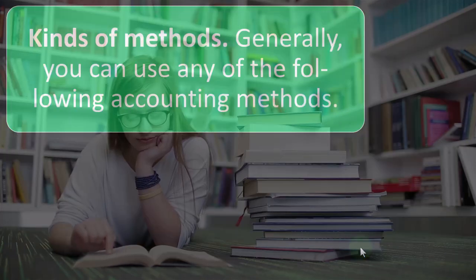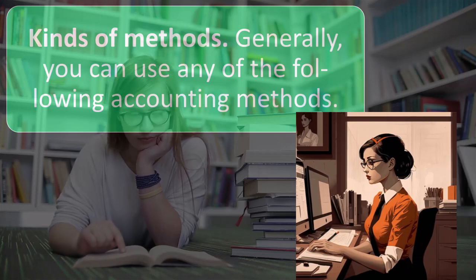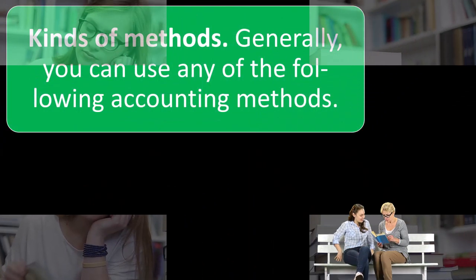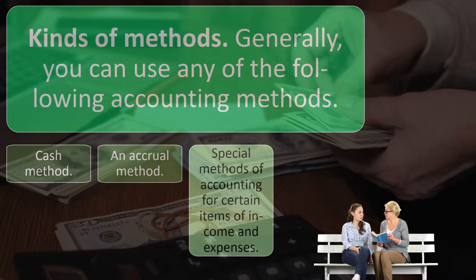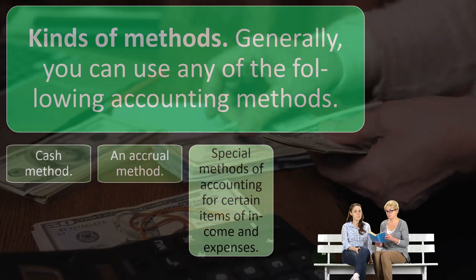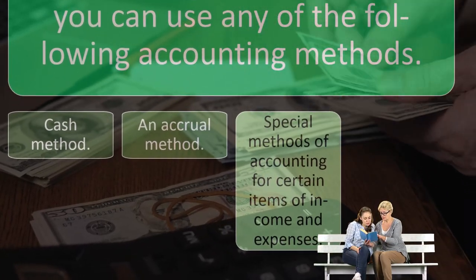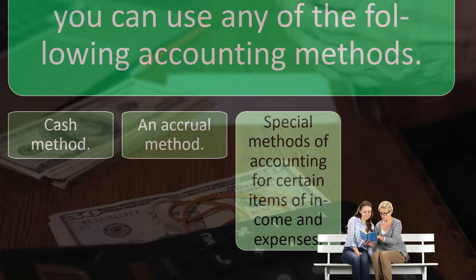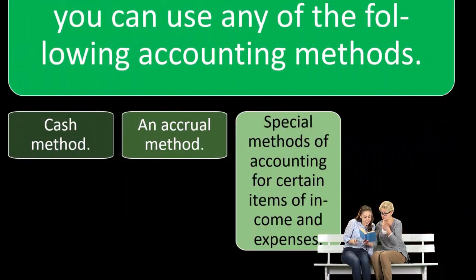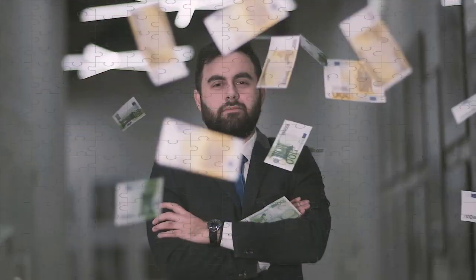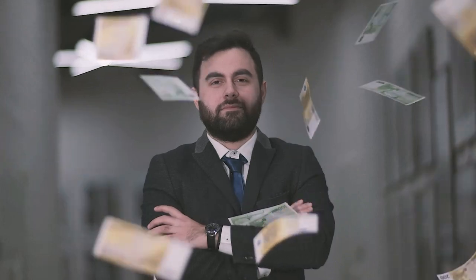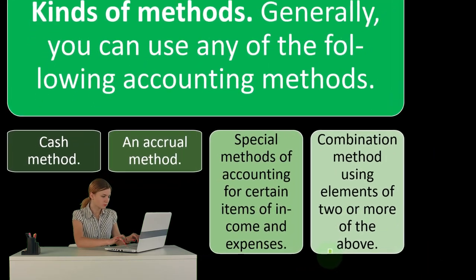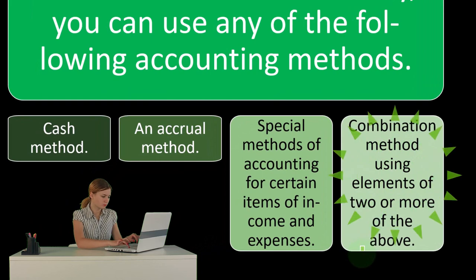Generally, you can use any of the following accounting methods: the cash method, the accrual method, or special methods of accounting for certain items of income and expenses. There's also a combination method — a hybrid — where, for example, your expenses are on a cash-based method and your revenue is on an accrual-based method because of the industry you're in. You can use a combination method using elements of two or more of the methods.